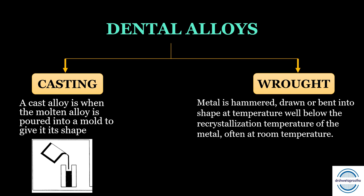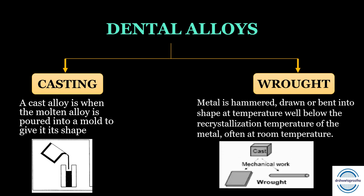Second are the wrought alloys. When the metal is worked, drawn, or shaped — hammered or bent into a shape — at a temperature below the recrystallization temperature of the metal, which is often room temperature, that is called a wrought alloy. We will be discussing wrought alloys in detail in this video.